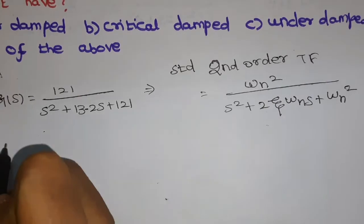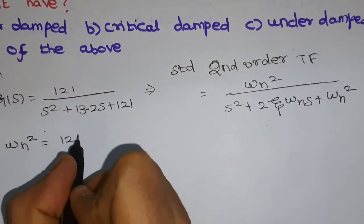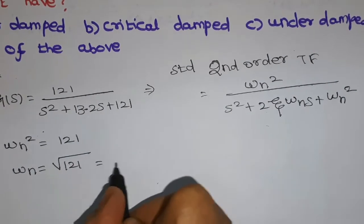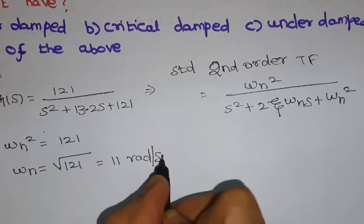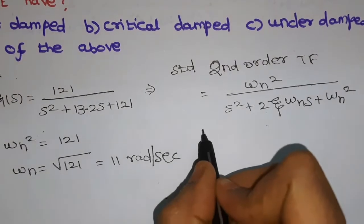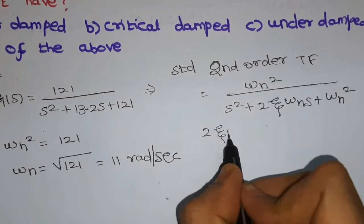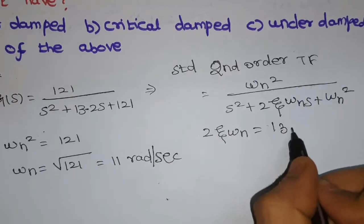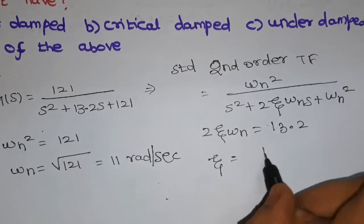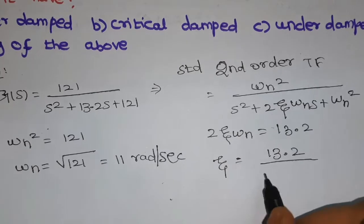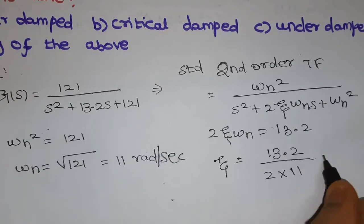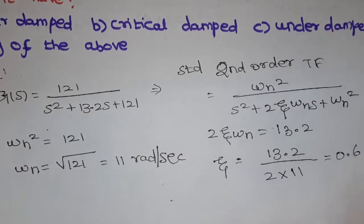By comparing these two equations, we get omega-n squared equal to 121, so omega-n equals the square root of 121, which is 11 radians per second — the unit of natural frequency. Then, from 2·zeta·omega-n equal to 13.2, we find zeta equals 13.2 divided by 2 times omega-n. Since omega-n is 11, we get zeta equal to 0.6.